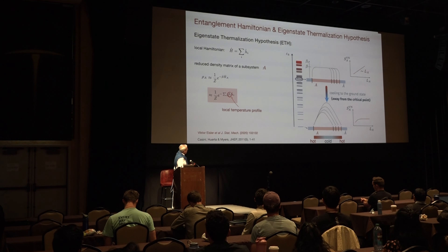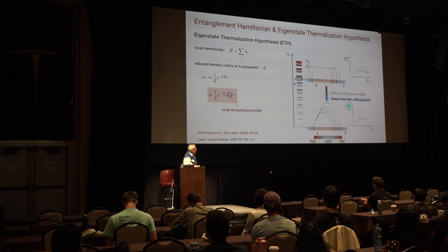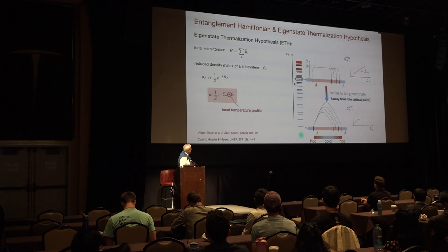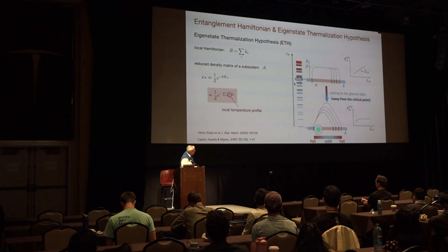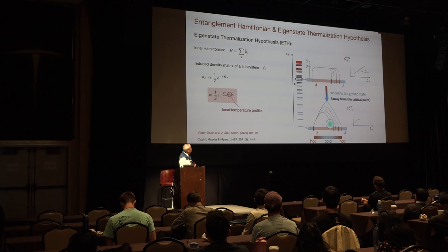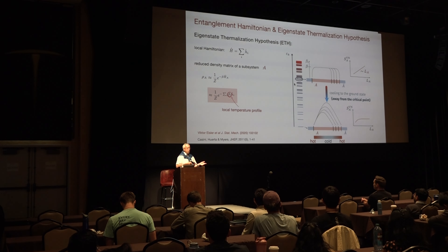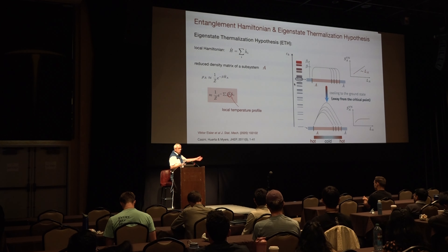What's interesting is that if you move away from the critical point, a priori conformal field theory is no longer valid. But there are some exactly solvable models, like free fermions, and what they show is that the same thing is still true, but the structure of beta(x) changes — it's more peaked, more like a triangle shape.